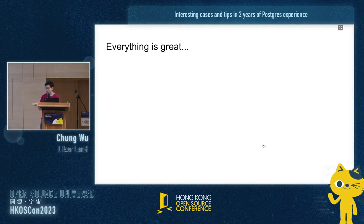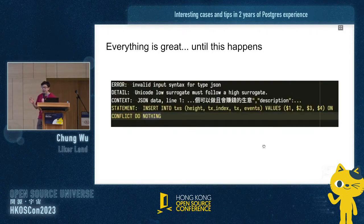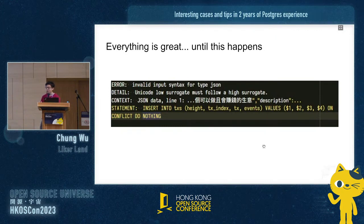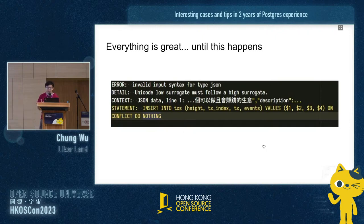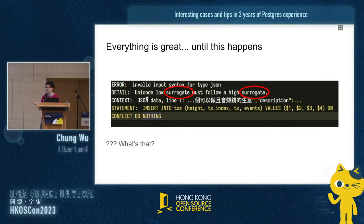Everything ran well for more than a year. And then something weird happened. We got an error from the Postgres database stating that there was invalid syntax for JSON, which was weird, because we simply call the chain API and put what is returned right into the Postgres database. The chain must return valid JSON — it's backed by the SDK, audited by many people. When we dug deeper into the error details, we encountered something called a surrogate, which is related to Unicode. We had no idea what it was or what its relationship was with JSON.